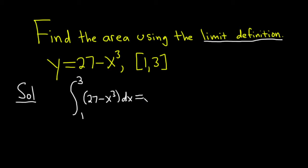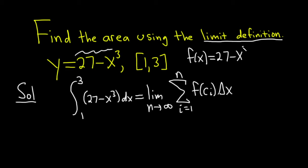So this is the formula we're going to use. It's the limit as n approaches infinity of the finite sum as i runs from 1 to n of f of c sub i times delta x. In this particular problem the f of x is 27 minus x cubed.